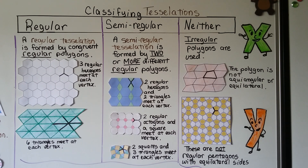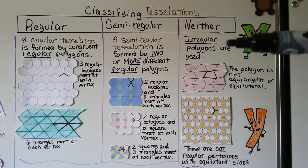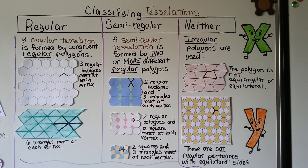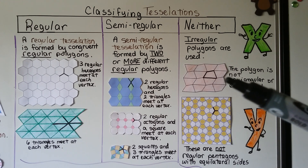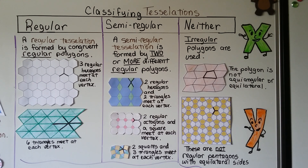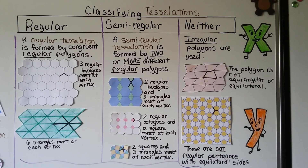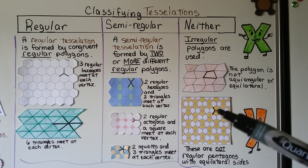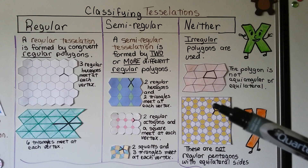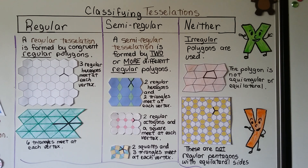For a tessellation to be classified as neither, irregular polygons are used — polygons that are not equiangular or equilateral. This example can fool you because it looks like pentagons, but they're not regular pentagons with equilateral sides. If you look carefully, one side is much smaller than the others, so it's not equilateral and therefore not equiangular either.